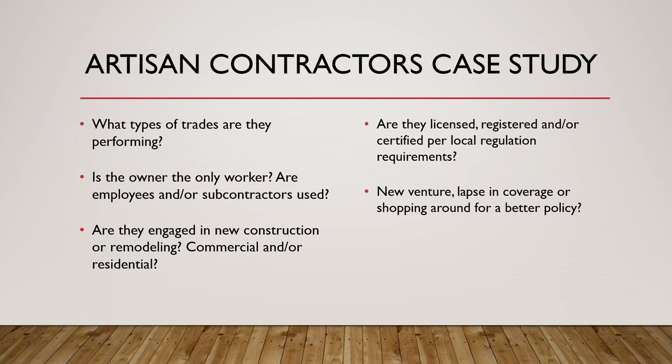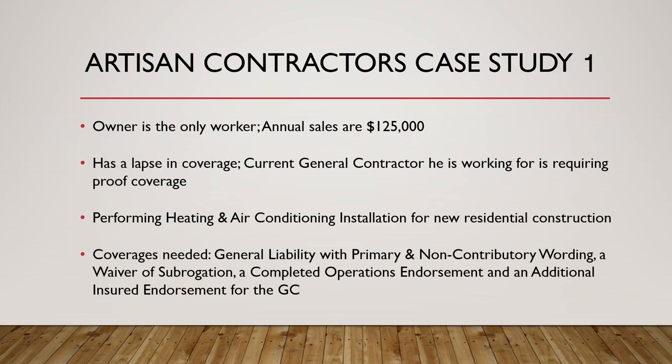I have put a few examples together of different types of contractors that we can go through together. The first one is a smaller risk where the owner is the only worker — no employees, no subcontractors. He's an HVAC worker installing heating and air conditioning units into new homes. He's had a lapse in coverage and is currently without insurance, but he's going to start working for a general contractor that is requiring him to get coverage. So this means that they have a contract together — the GC and your client — so it would be a great idea to get a copy of this contract so you know exactly what coverages your client needs, in addition to any additional insured endorsements that may be required.